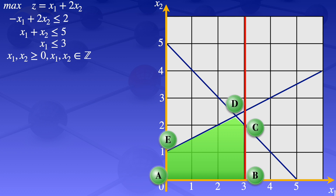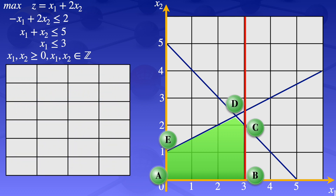The next step is to evaluate the objective function at the corner points of the feasible region. I will draw a table with columns: point, x1, x2, and the objective function z. At point A, we have x1 = 0 and x2 = 0. Substituting these values into the objective function, we get z = 0.